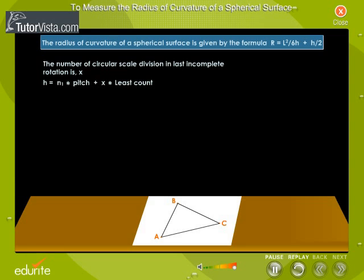Measure the distance between the impressions. Note the distance AB, BC and AC. Then, calculate the mean value as shown here. The radius of curvature of the spherical surface is obtained by substituting the values of H and L in the formula R is equal to L square by 6H plus H by 2.